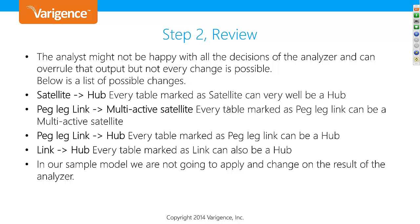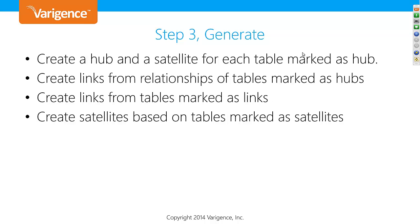It's almost impossible to fully auto-generate a data warehouse — if it were, most of us would be out of a job. So you take that auto-generated code, review it, put your human and business knowledge on it, and say: hold on, this column should be moved from this satellite to that satellite. Step two is a review, which we'll do next week using metadata to re-tag things as satellites and hubs. Step three is generate. We create a hub and satellite for each table marked as hub, create links from relationships of hub-marked tables, create links from tables marked as links, and create satellites from tables marked as satellites.